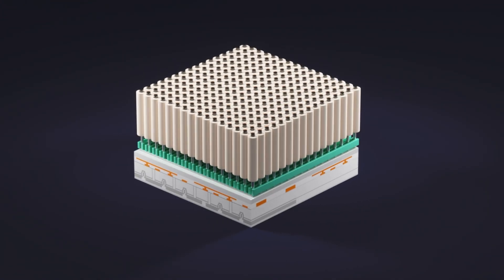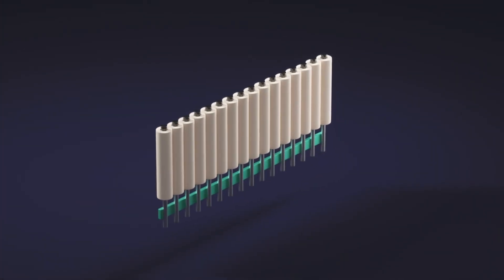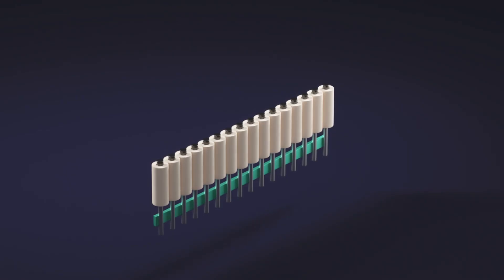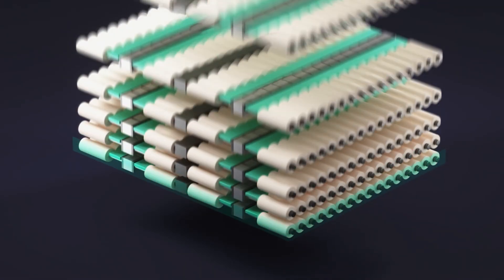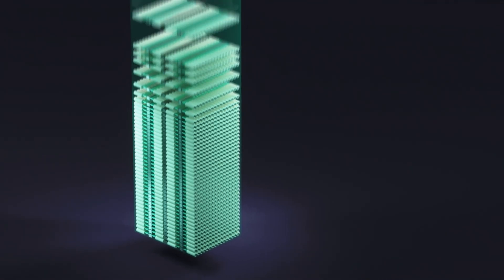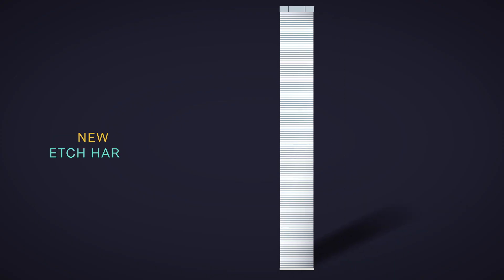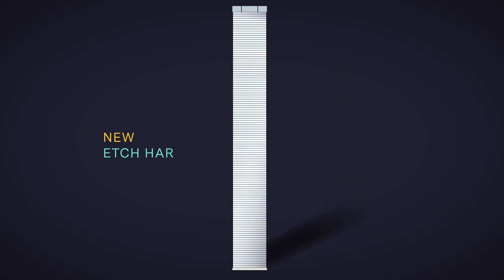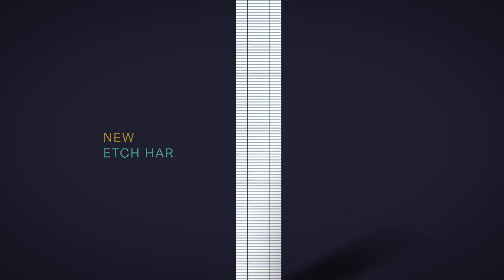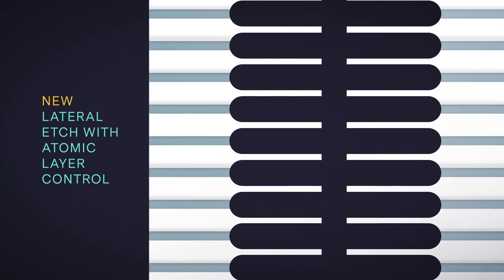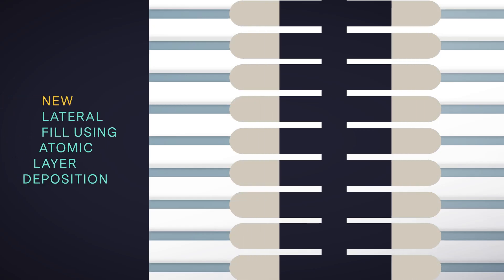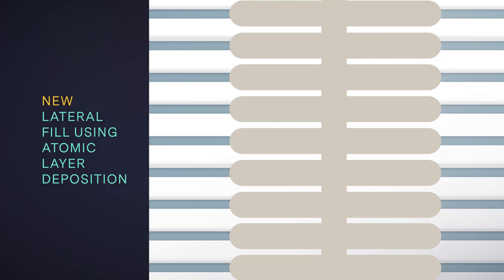When 2D reaches its scaling limit, the roadmap calls for 3D scaling. Here, the memory cells are effectively rotated by 90 degrees and stacked upwards. This requires high aspect ratio etch through microns of alternating material, akin to channel hole etch in NAND, followed by a lateral etch that forms indentations in each layer that subsequently need to be filled using Atomic Layer Deposition.